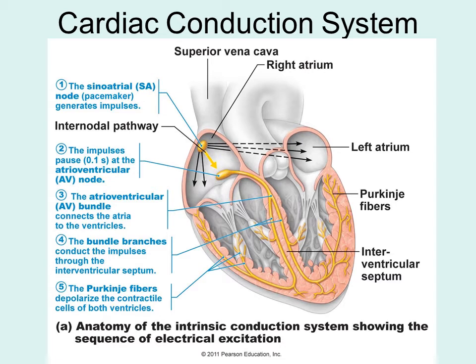The cardiac conduction system refers to the intrinsic conduction system that shows how you initiate the electrical impulse that is going to trigger the heart to contract. The electrical impulse is not triggered by the nervous system; instead it is triggered by pacemaker cells located at the sinoatrial node — the SA node — commonly referred to as your pacemaker cells.